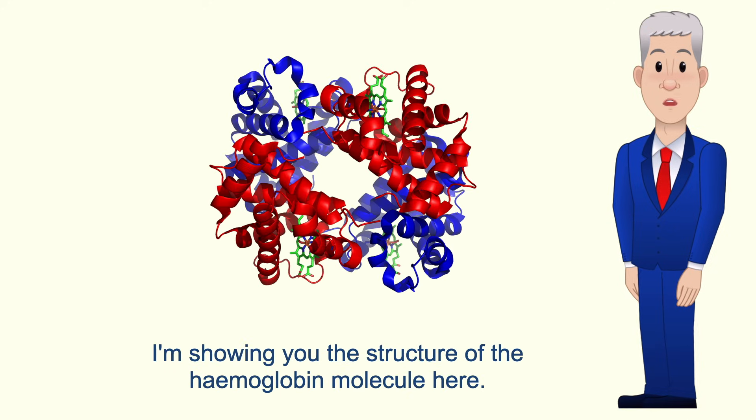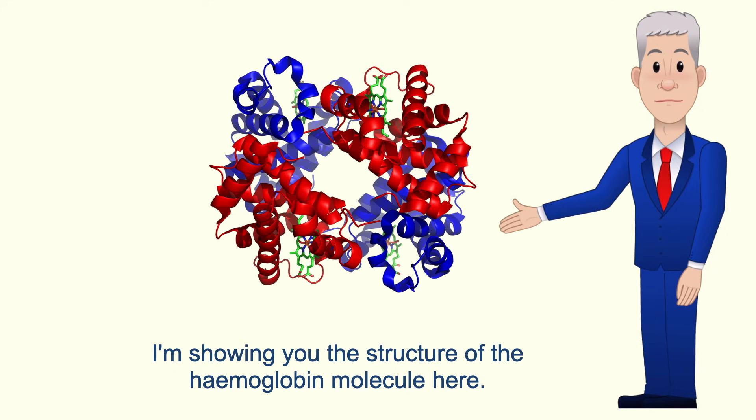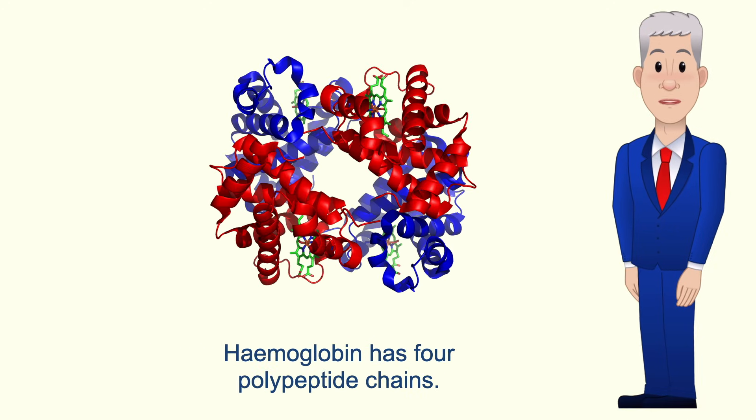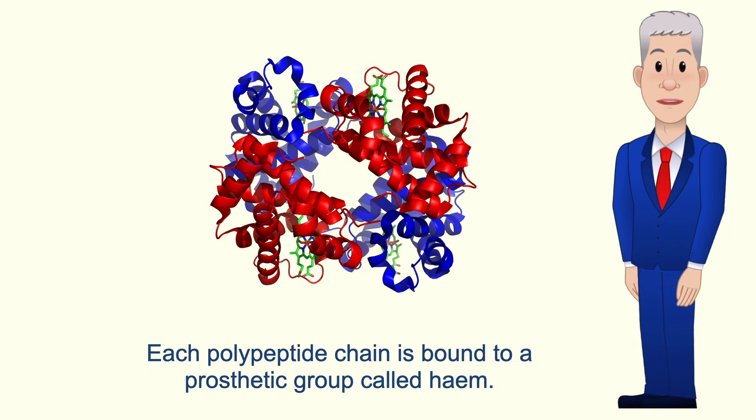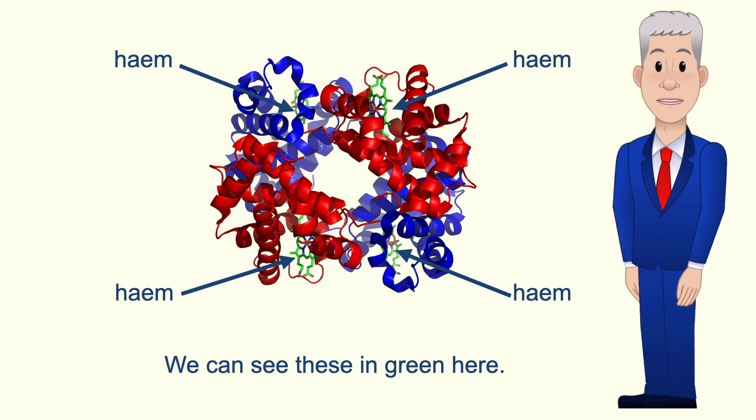I'm showing you the structure of the haemoglobin molecule here. Haemoglobin has four polypeptide chains—two are shown in red and two are shown in blue. Each polypeptide chain is bound to a prosthetic group called haem and we can see these in green here.